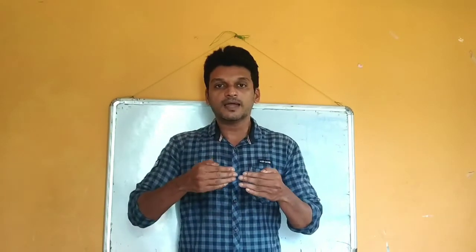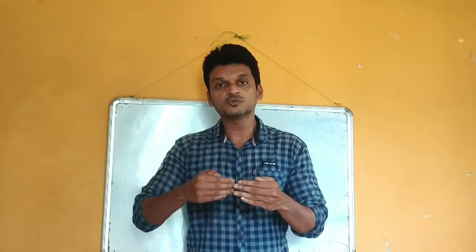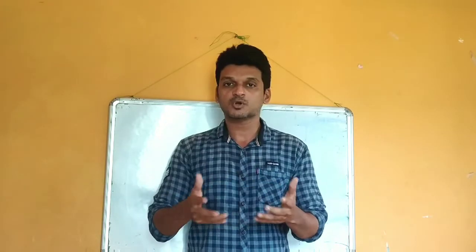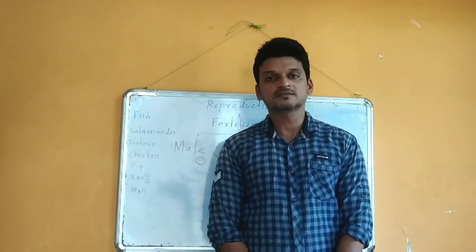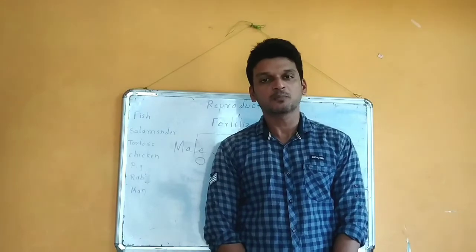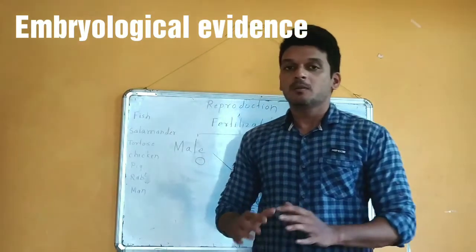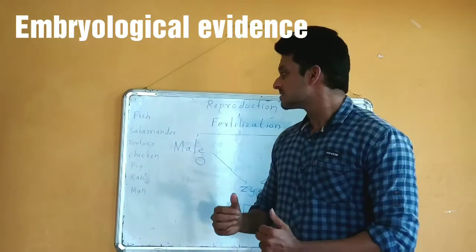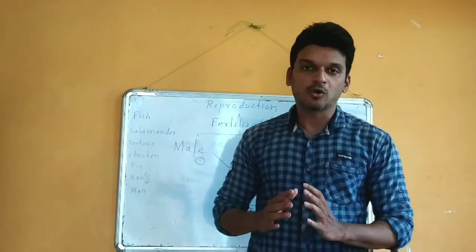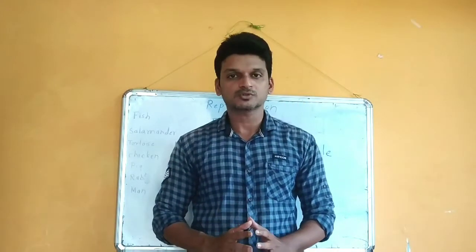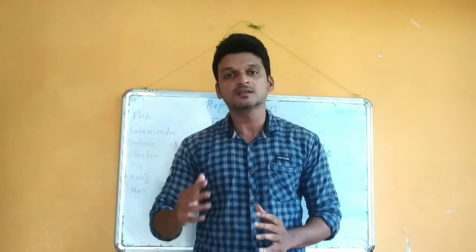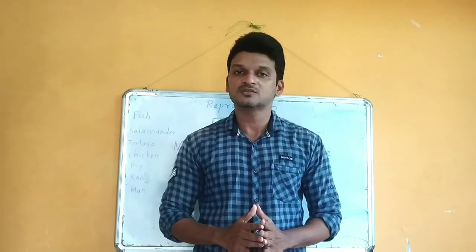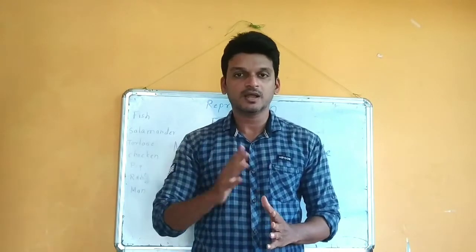All these connecting links indicate the fact that animals gradually developed into different species because of the process of evolution. Now we are going to learn our sixth and last evidence that supports the theory of evolution. Before we start, we need to understand what an embryo is.